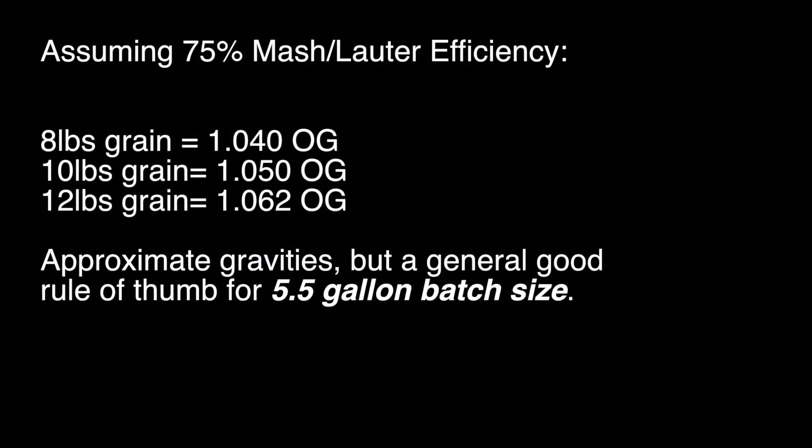What happens is when you work with percentages, if I'm getting 80% efficiency and you're getting 70% efficiency, you would factor that in to the final poundage. So let's talk about how you work with percentages in a recipe. If you don't have software at your disposal, a good general rule of thumb is: whenever I build a recipe, I first think about what I want my starting gravity to be. At 75% efficiency, eight pounds of total grain will give you a 1040 beer, 10 pounds of grain will give you a 1050 beer, and 12 pounds of grain gets you just over 1060.